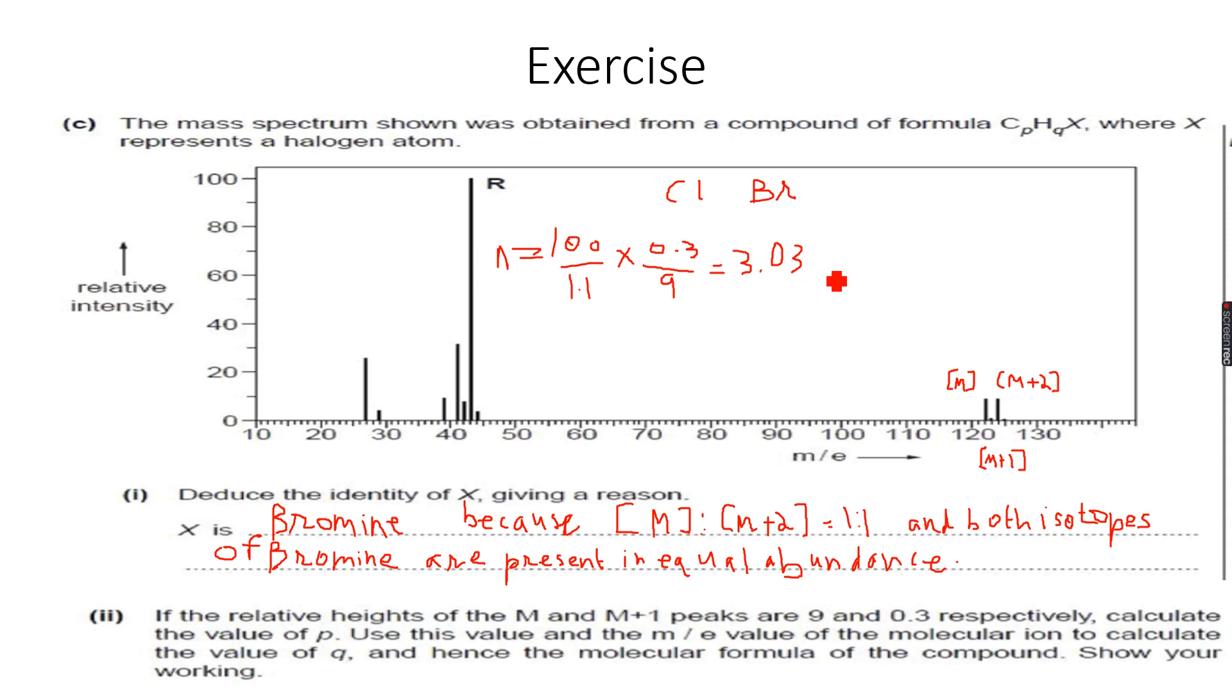Something like 3.03 with 0.3 recurring, so I put a bar over here. I can approximate this to 3 because that's my nearest whole number. So I have 3 carbon atoms, so p is equal to 3.